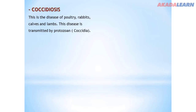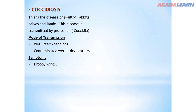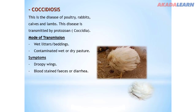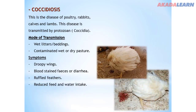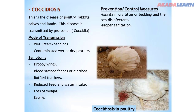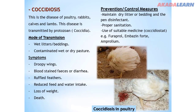Coccidiosis is a disease of poultry, rabbits, calves, and lambs. It is transmitted by protozoa also known as coccidia. Mode of transmission: wet litter or beddings, and contaminated wet or dry pasture. Symptoms: droopy wings, blood-stained feces or diarrhea, ruffled feathers, reduced feed and water intake, loss of weight, and death. Control: maintain dry litter or bedding, use disinfectants, practice proper sanitation, and use suitable medicines such as amprolium, furazolidone, and embezine.